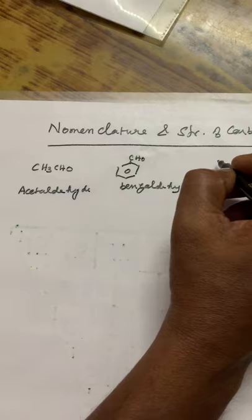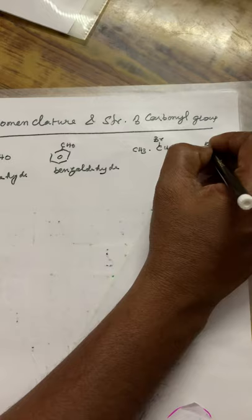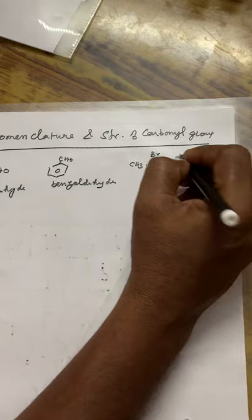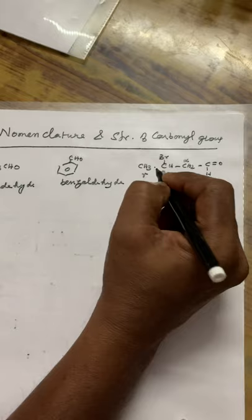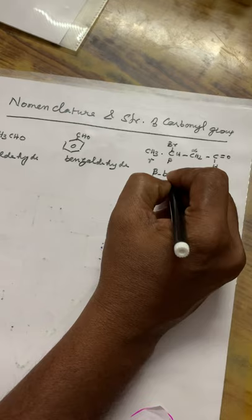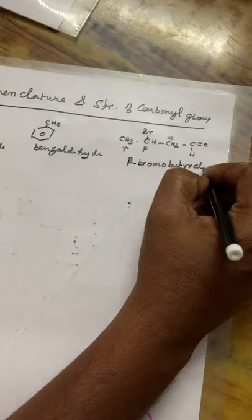Take another compound: CH3-CHBr-CH2-CH2-CHO. This is the functional group — this carbon should be alpha, this carbon beta, this carbon gamma. What is the common name? Beta-bromobutyraldehyde. Because 4 carbon atoms are there, the common name uses 'butyl' — beta-bromobutyraldehyde.